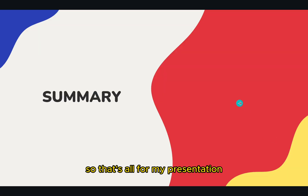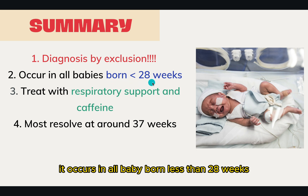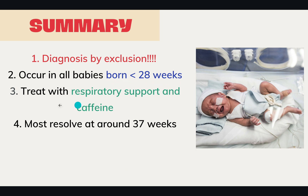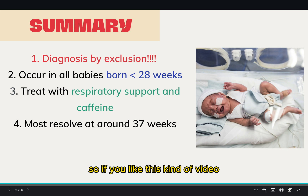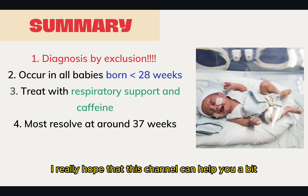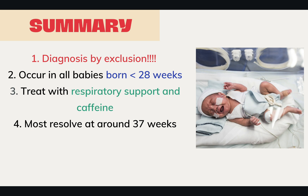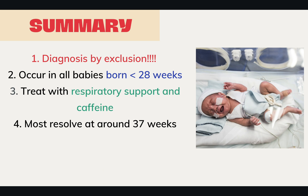That's all for my presentation. In summary: the most important thing is apnea of prematurity is a diagnosis by exclusion. It occurs in all babies born less than 28 weeks. It is a physiological process instead of a disease. We can treat with general measures, respiratory support, and caffeine. Most cases resolve at around 37 weeks. If you like this kind of video, please subscribe to my channel — I hope to build a community of pediatricians in training and medical students or staff interested in pediatrics. Like this video and let me know in the comments what you want to know. See you next time!